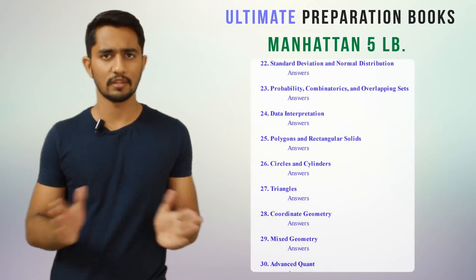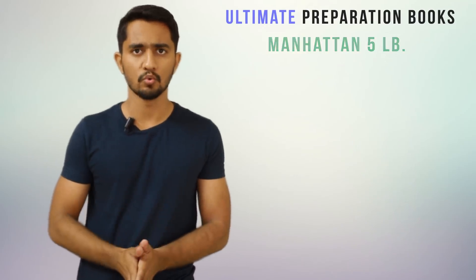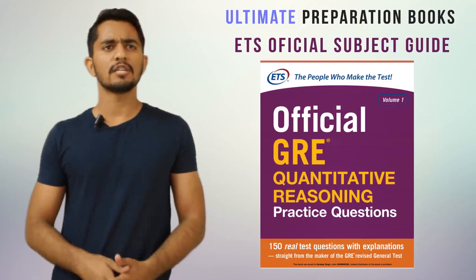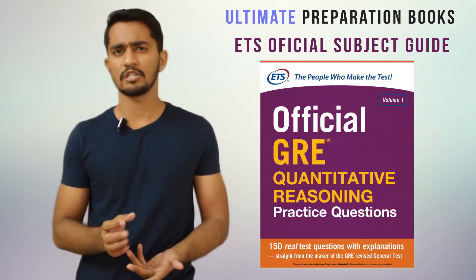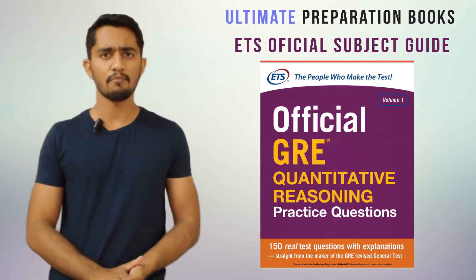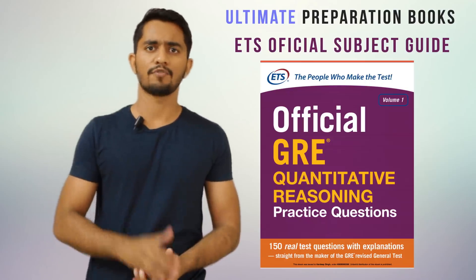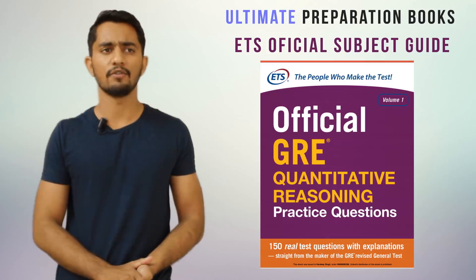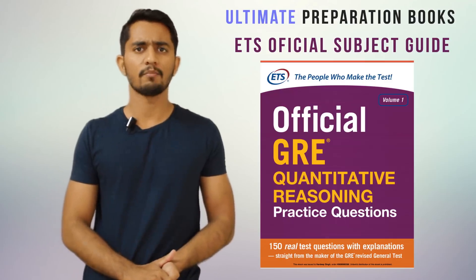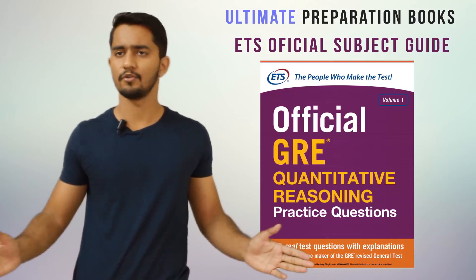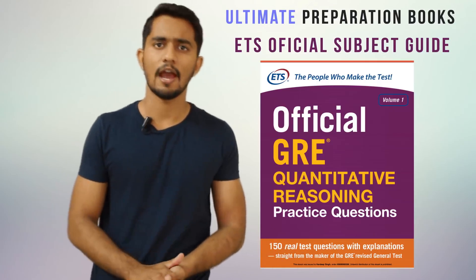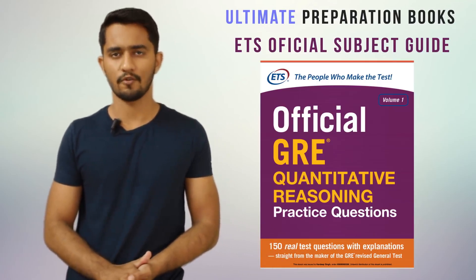Once you are done with that, you need to go to the ETS official subject guide of quants. This book is a small book, the number of questions are not many, but this is very important to get the real feel of the type of questions you would get in the exam. This book you can complete in four days and after you complete both of these books you require no other test material. You can directly go to attempting mocks and scoring your dream score of 170.